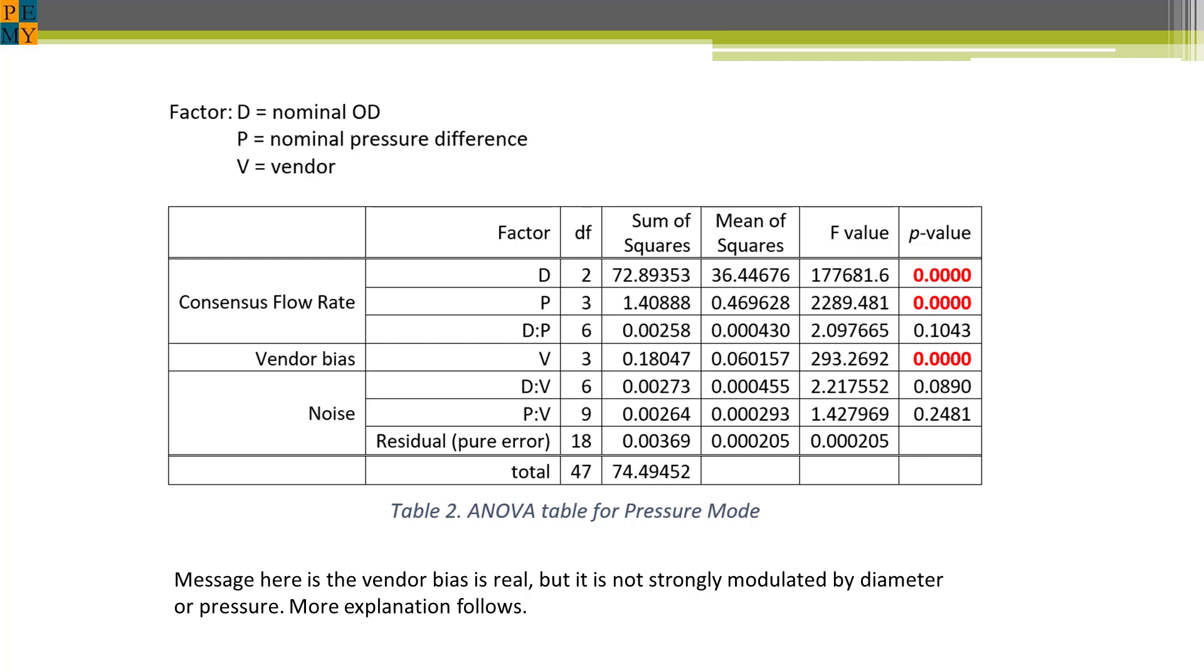The D colon V and the P colon V are interactions between factors. As you know it is possible for factors to interact. Another informal way of saying this is that the whole effect can be greater than the sum of the parts.